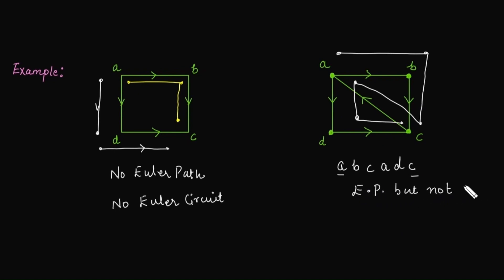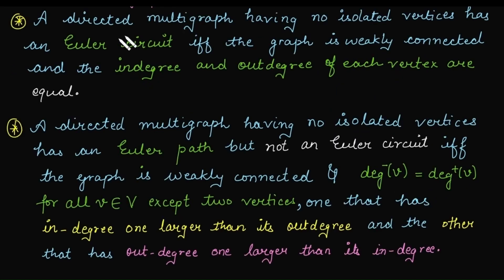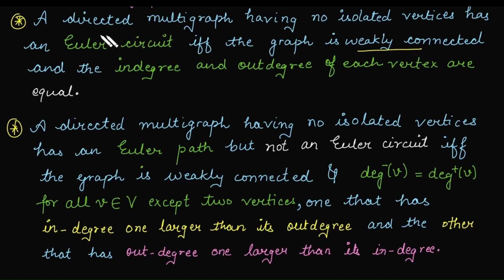To determine whether a directed graph has an Euler circuit or an Euler path, we first need to know what a weakly connected graph is — a graph that is connected in its underlying undirected graph. A directed multigraph with no isolated vertices has an Euler circuit if and only if it is weakly connected and the in-degree and out-degree of each vertex are equal.